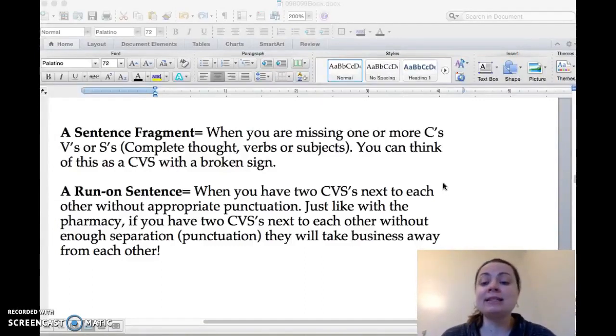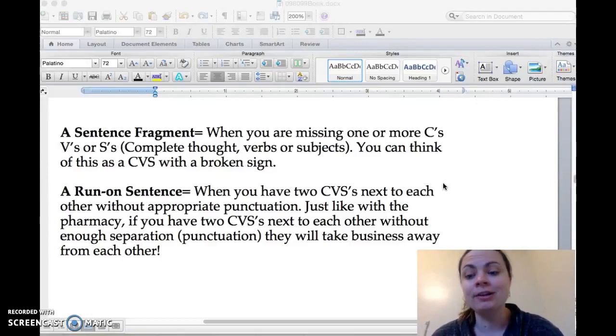If you have a run-on sentence, it's where you have two complete thought verbs and subjects that are smushed next to each other and they don't have the appropriate punctuation. If you have two CVS's in Philadelphia that are right next to each other, they can take away business from each other, which is just like with your sentences. If you've got two complete thought verb subjects smushed together, it means you're not giving enough space to your individual sentences.